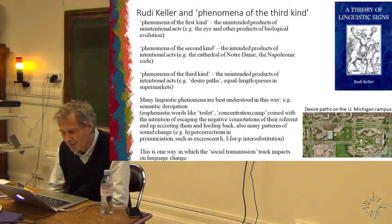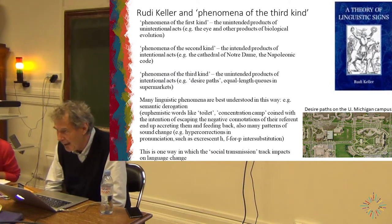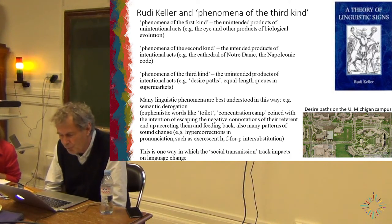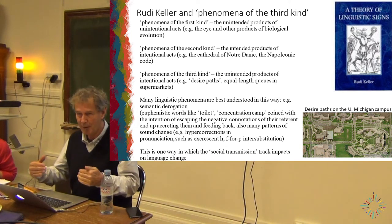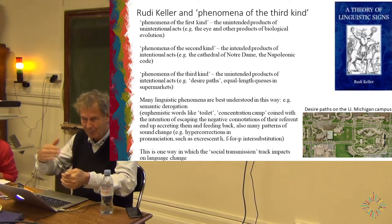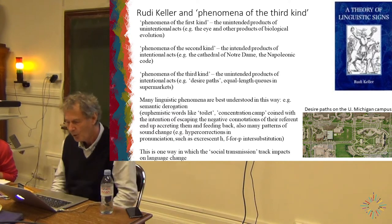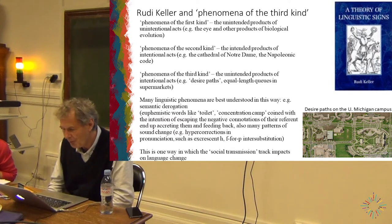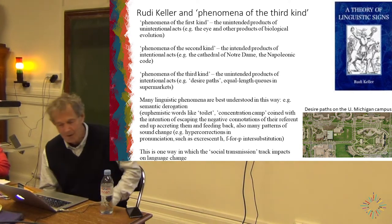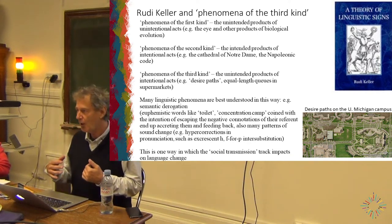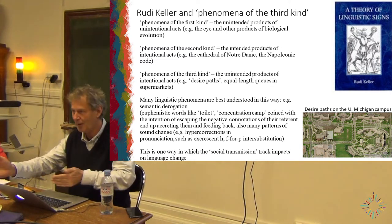The phenomena of the third kind, as Keller points out, are the unintended products of intentional acts, and this plays a big role in all human cultures. Simple examples: equal-length queues in a supermarket don't arise because people say 'let's form equal-length queues' — they arise because everyone wants to get through as quickly as they can and makes agent-based decisions. Or there are 'desire paths' — where people create a path by going where they want to go. The ANU has one of the most poorly thought-through systems of concrete paths, and constantly there are desire lines cutting shortcuts around those.